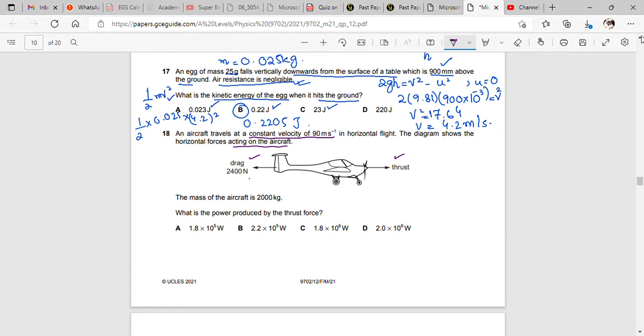The mass of the aircraft is 2000 kg. What is the power produced by the thrust force? The constant velocity here is the key point. The constant velocity is an important part for us.